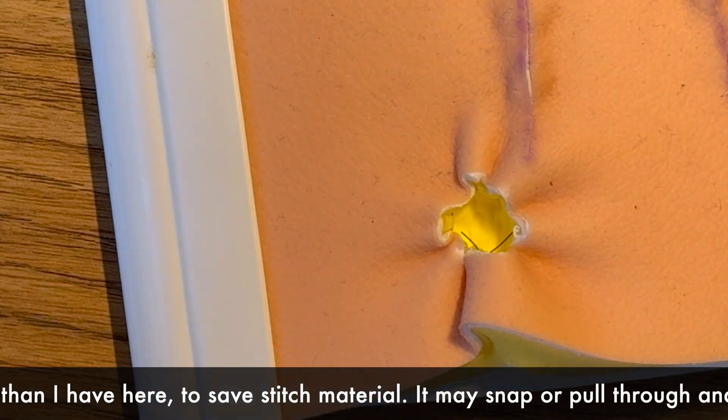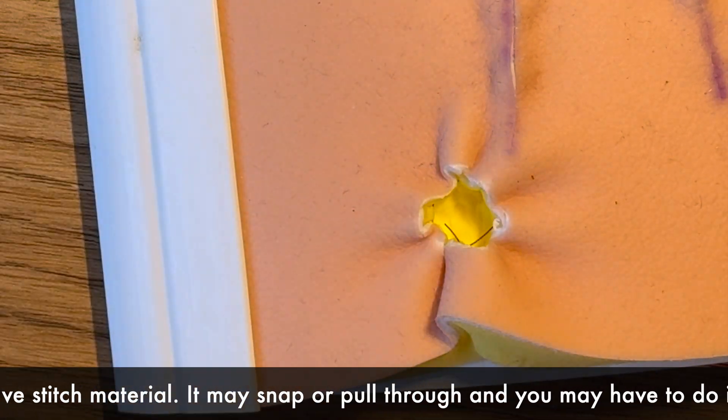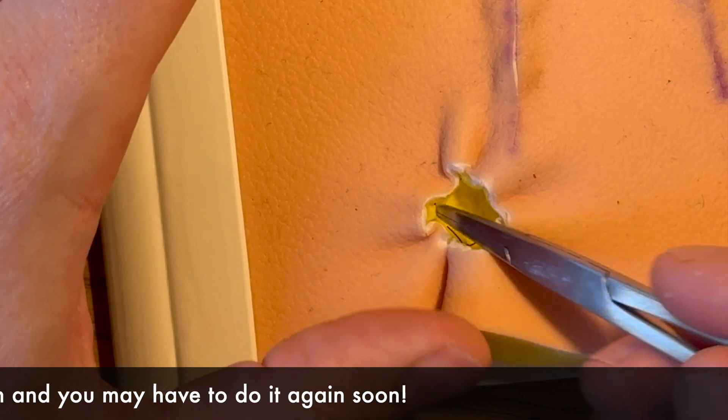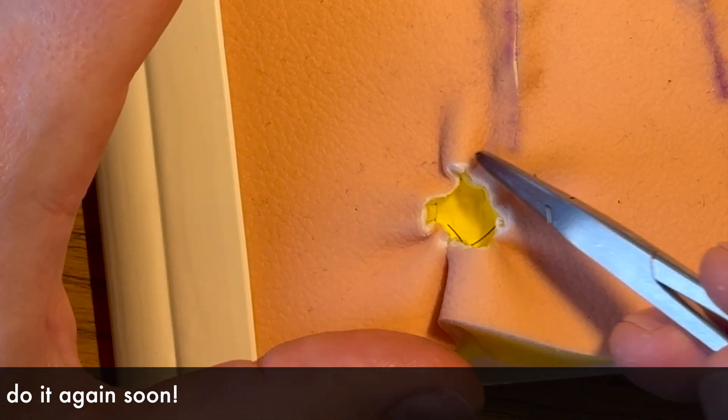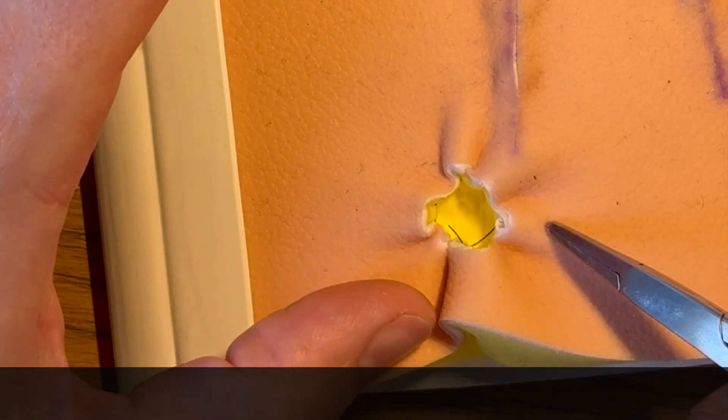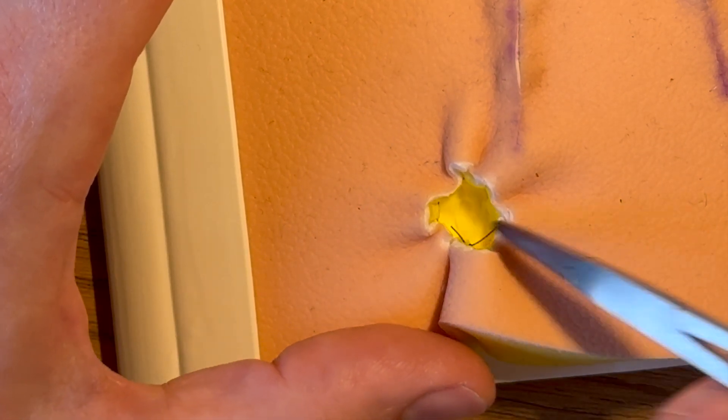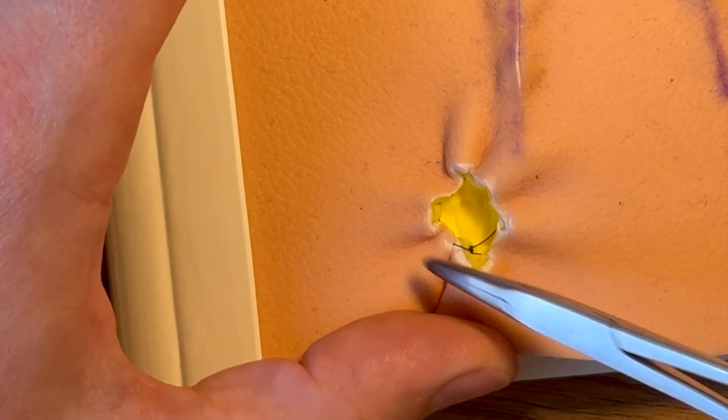And then what will happen is that will gradually heal by secondary intention and it will fill in. The edges will come together and then all these bobbly bits will sit down and it'll flatten over a period of weeks. So you tell the patient not to be alarmed, it's going to look very odd for a bit and then it will all sort itself out.